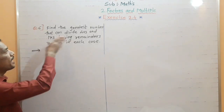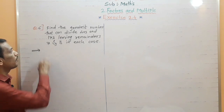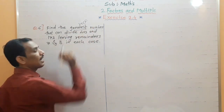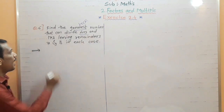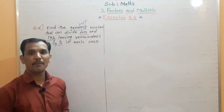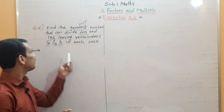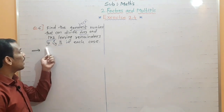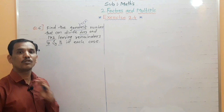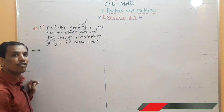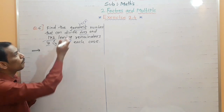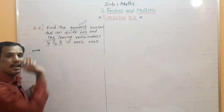Moving to question number six: find the greatest number that can divide 403 and 173 leaving a remainder of 7 and 8 in each case. Greatest number means HCF. We want to find the HCF of 403 and 173 leaving a remainder of 7 and 8 respectively. This question is different from the first — here we have different remainders for each number.